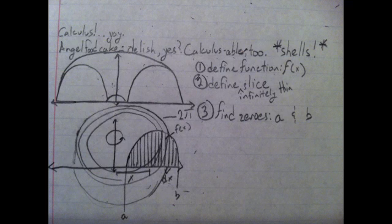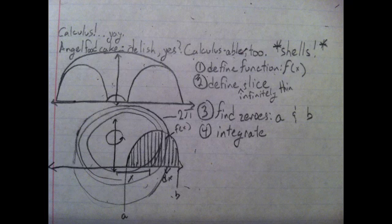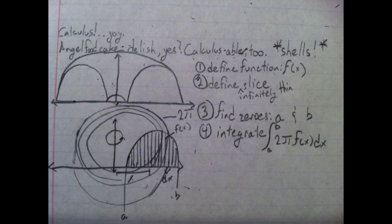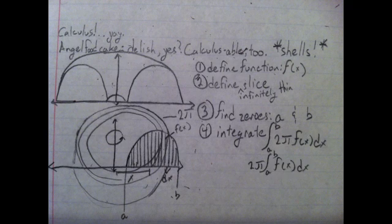Now that we have all of our components, we can integrate or take the integral from a to b of 2π f(x) dx. Because it's a constant, 2π can be moved outside of the integral.